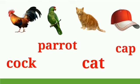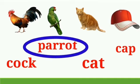Now let's see some more examples of odd man out. See: Cock, Parrot, Cat, and Cap. All words are starting from the letter C — Cock, Cat, Cap — except which word? Correct! Parrot. So that's why Parrot is the odd man out, because all other words start with the letter C.